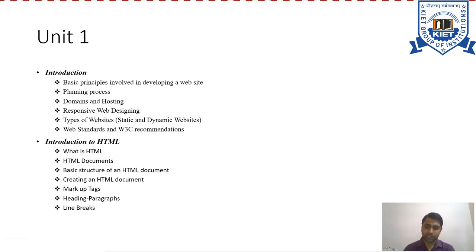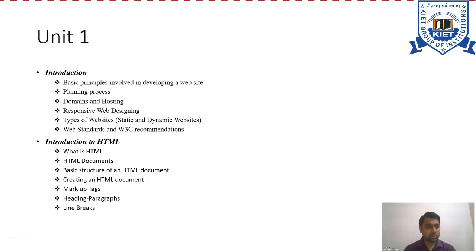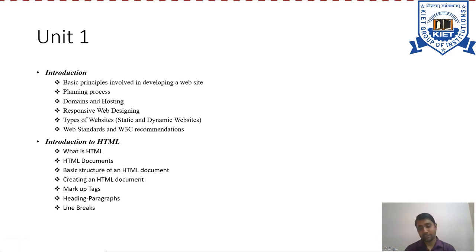Unit one is divided into two parts. The first part will discuss the basic principles and attractiveness of web designing — how to make a more attractive website that attracts more customers and users. The second part covers the planning process, domains, hosting, responsive web designing, types of websites like static and dynamic, web standards, and W3C recommendations.